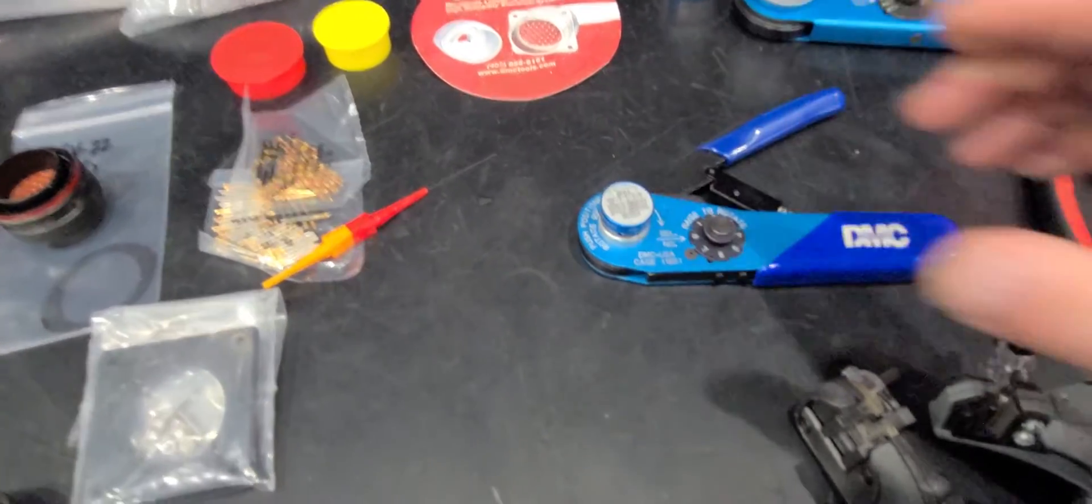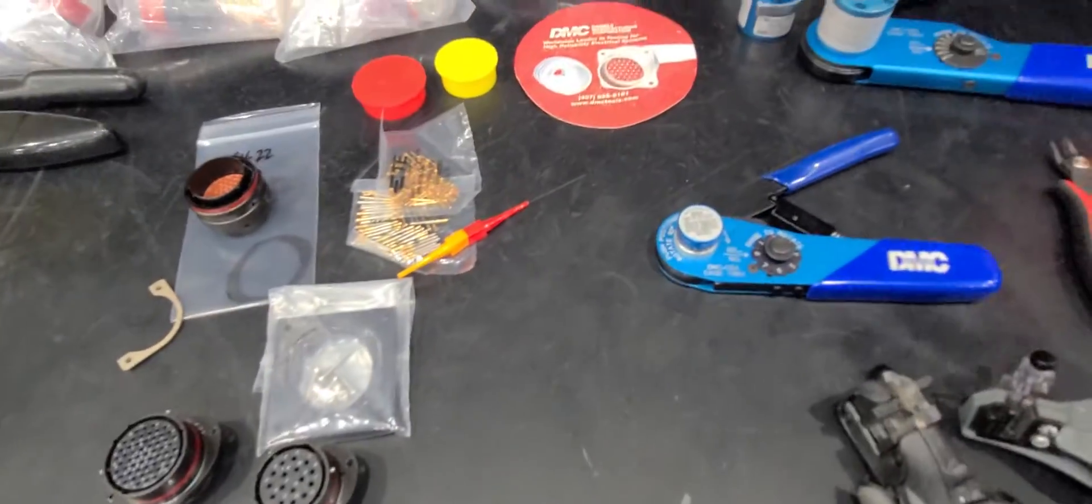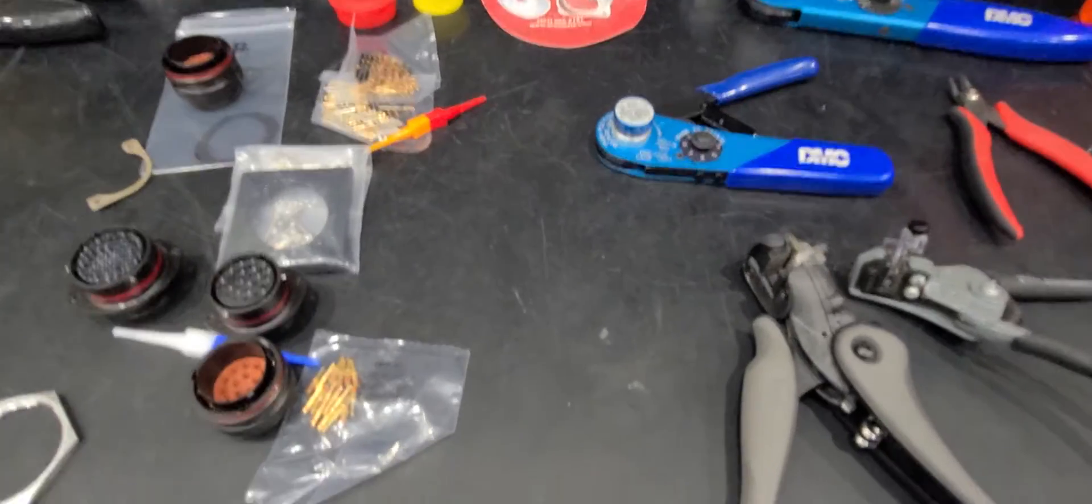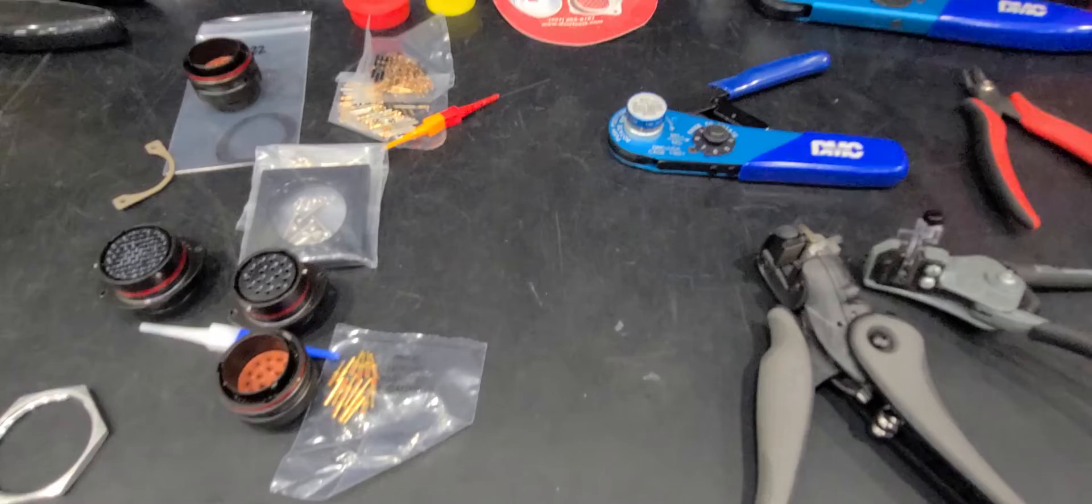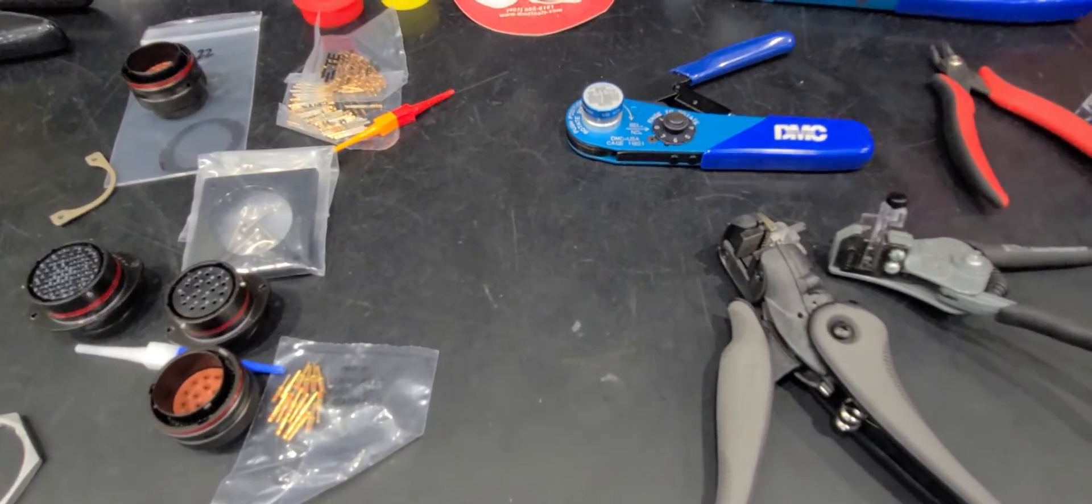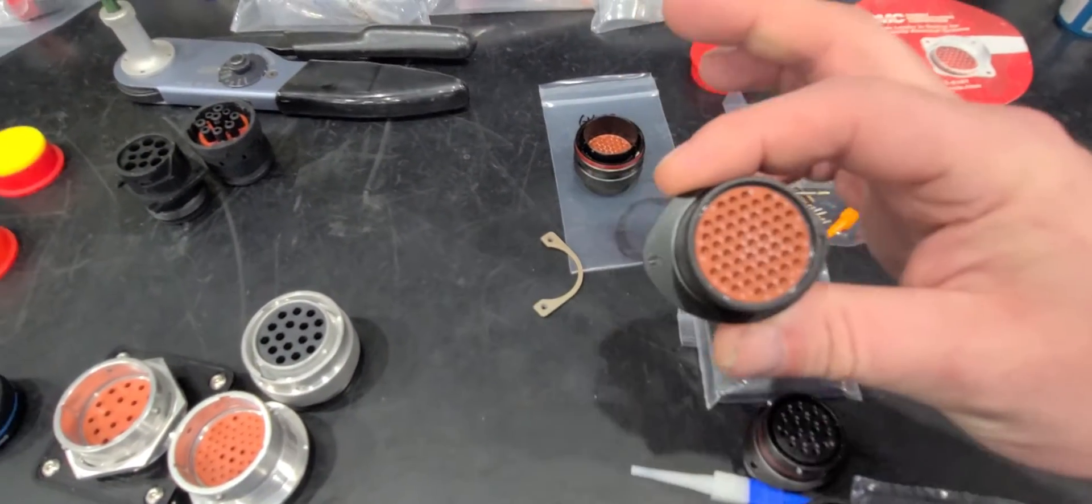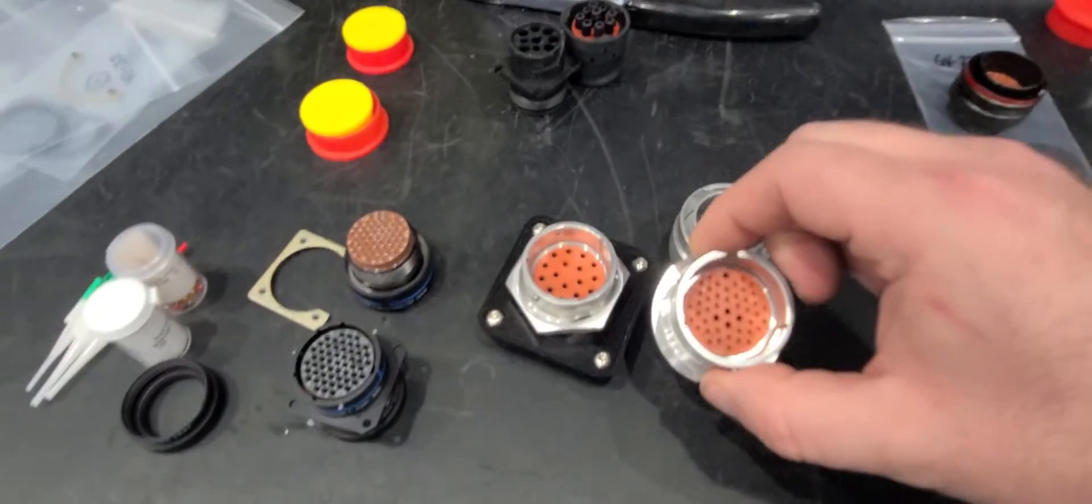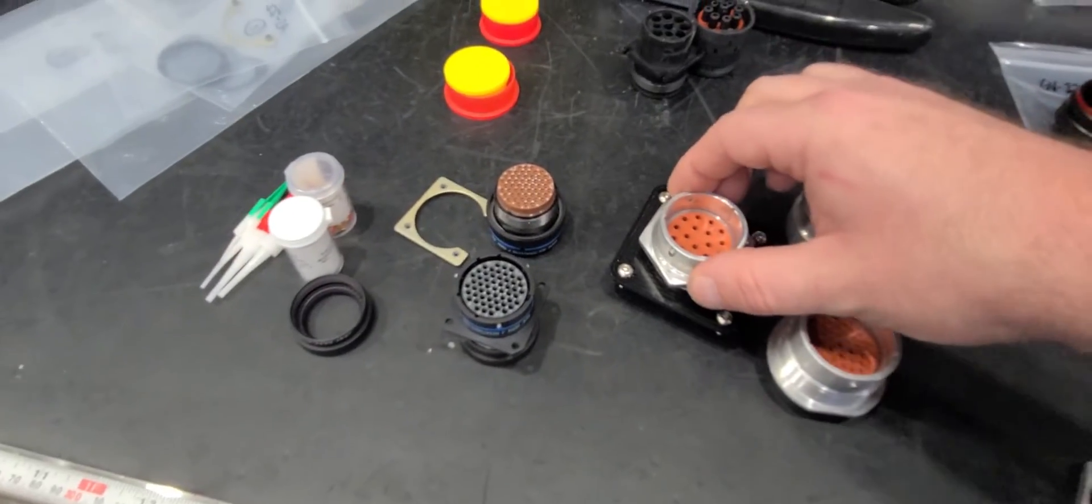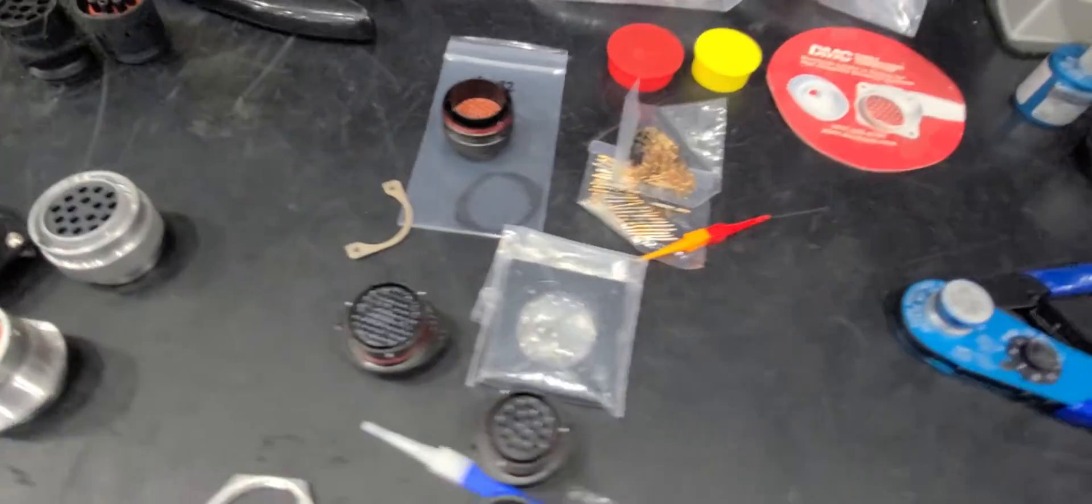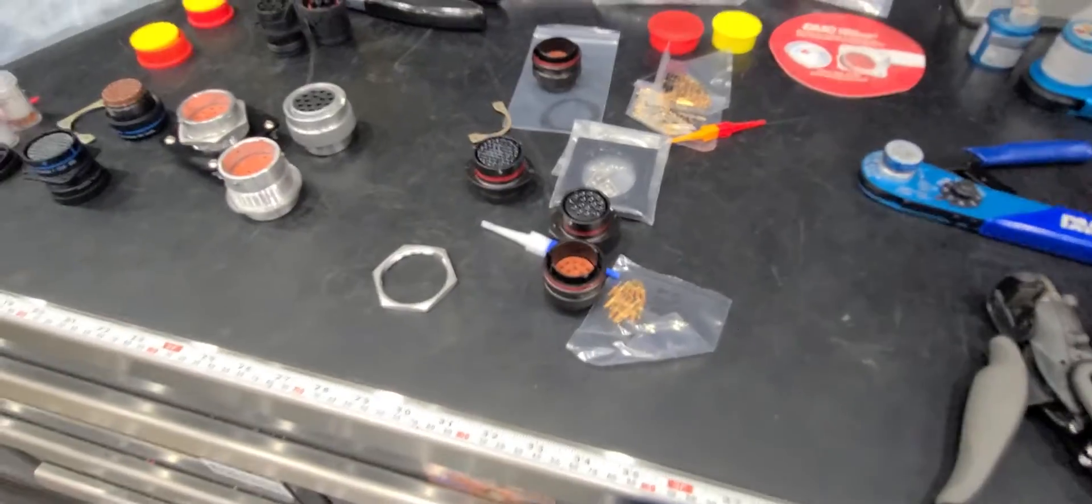When you have an autosport connector, you need a different positioner for each pin that you use. So they have size 16, I mean they have all the way up to size 4, but they have size 16, 20, 22, 23. You can get a 100 pin connector that's this size. So you'll never get that in this or this. You'll never get that type of density in that small of a package. So you have to kind of decide what you want.